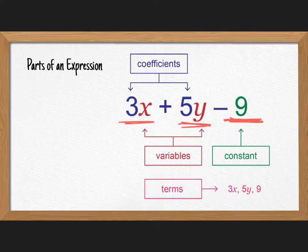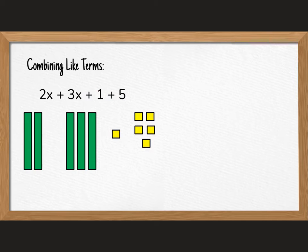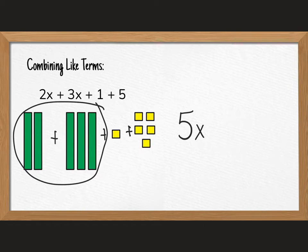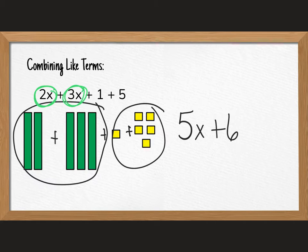First we're going to look at combining like terms using the algebra tile idea. So here you can see I've set up the algebra tiles ahead of time. We have 2x plus we have three more x's plus a unit of one plus five units right there. So if we thought about combining like terms, we could put these together and we could say, well, I have 5x. And then we could combine these together in a group and we could say plus 6. So when we're combining like terms, we're combining things that are alike. And one thing I like to do is color code it.